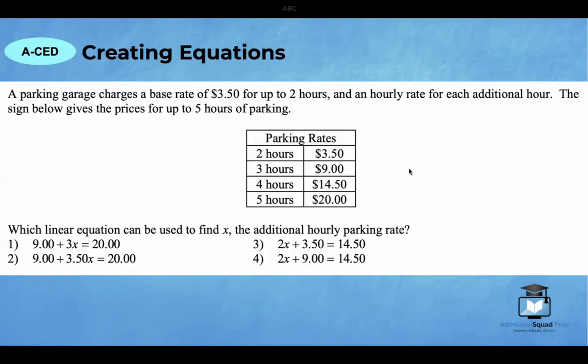The third category we need to prioritize is called creating equations. A parking garage charges a base rate of $3.50 for up to two hours and an hourly rate for each additional hour. The sign below gives the prices for up to five hours of parking. Which linear equation can be used to find x, the additional hourly parking rate? I would start off by identifying the base rate. The base rate for the parking garage is $3.50 for up to two hours. That's going to be our initial base amount. So I will examine answer choice 1 and 2 very carefully. Three does not really come up in this problem at all. And then $3.50 times x wouldn't make sense because $3.50 is a base rate. It is a fixed one-time cost.